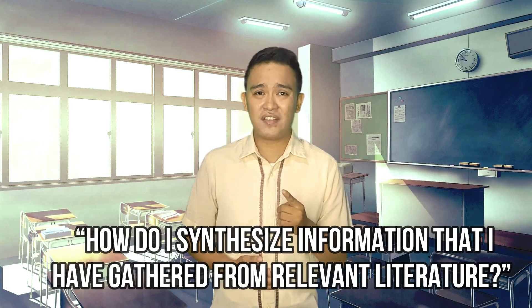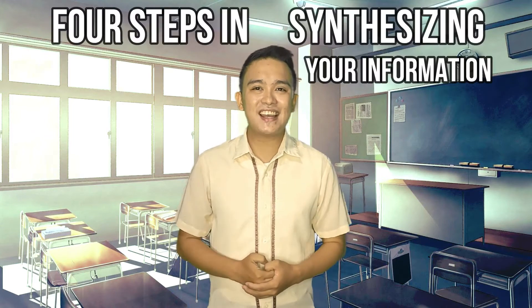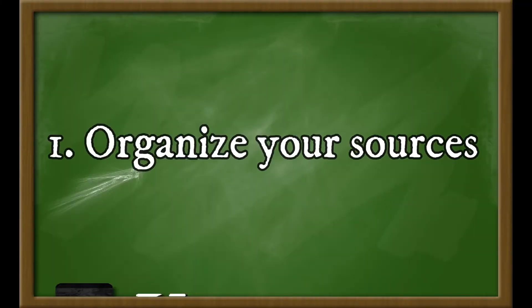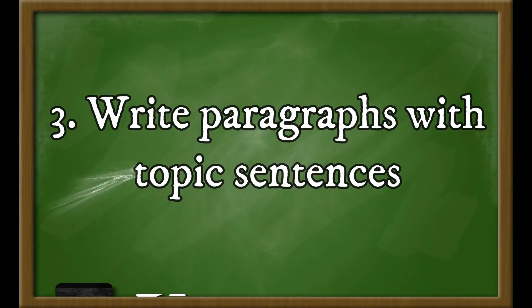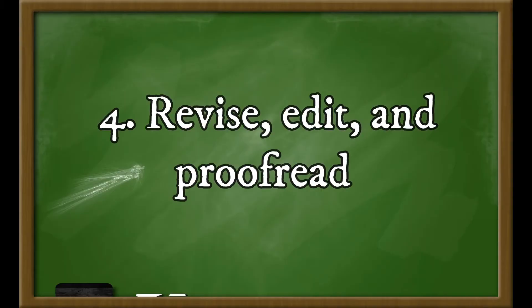You might be asking — how do I synthesize information that I have gathered from relevant literature? Here are four steps in synthesizing your information. Number one, organize your sources. Number two, outline your structure. Number three, write paragraphs with topic sentences. And number four, revise, edit, and proofread. Are you set now to know these things? Let's go!